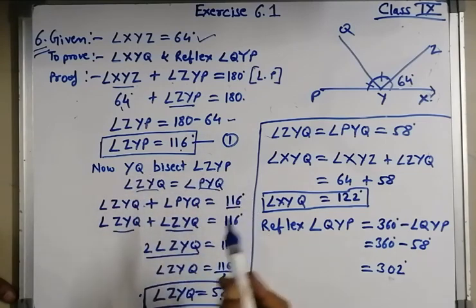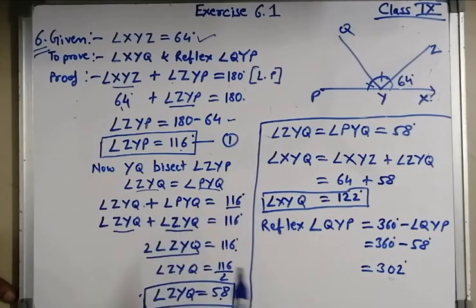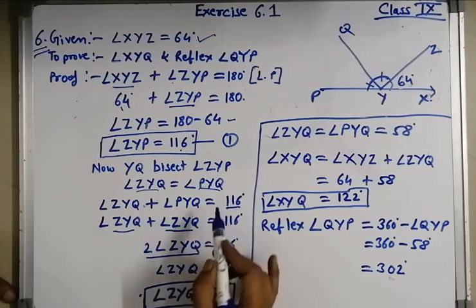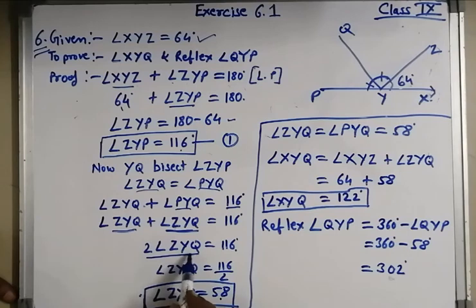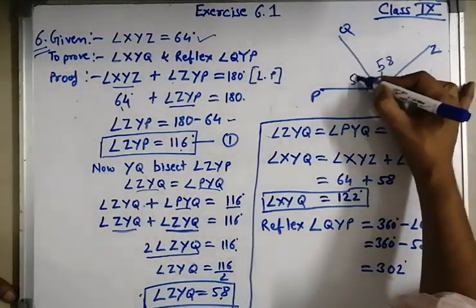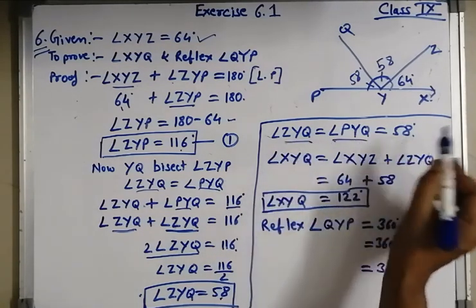As we know that QY bisects angle ZYP, angle ZYQ is equal to angle PYQ. Because both angles are equal since YQ bisects angle ZYP. So ZYQ plus ZYQ is equal to 116 — these two are equal — so 2 angle ZYQ is equal to 116. ZYQ is equal to 116 upon 2, so ZYQ is equal to 58 degrees. Both angles will be 58 degrees.